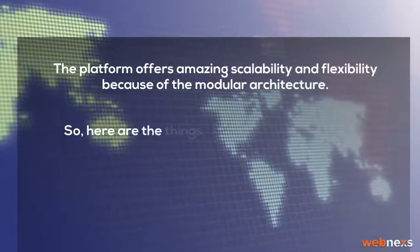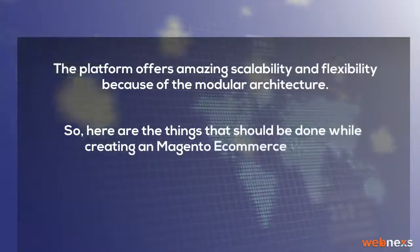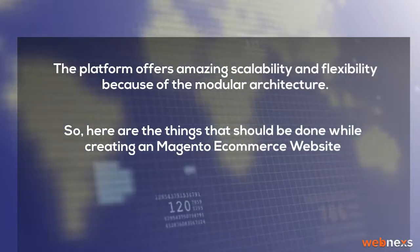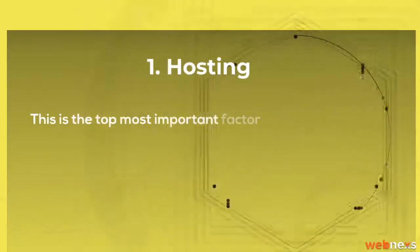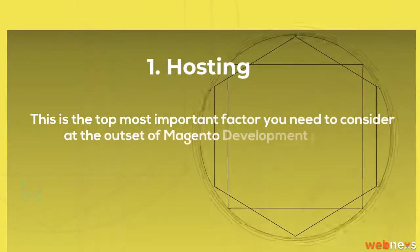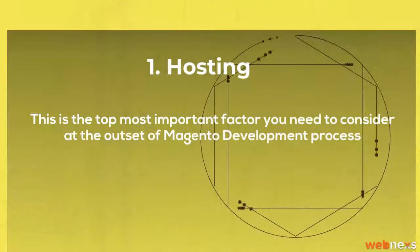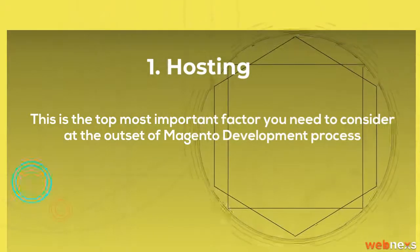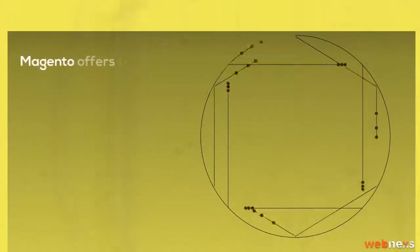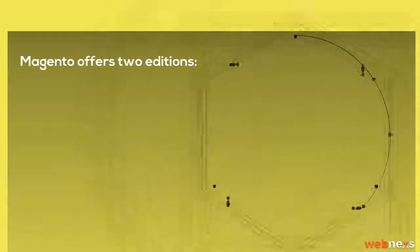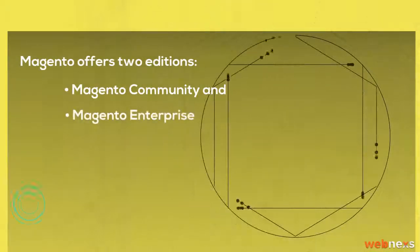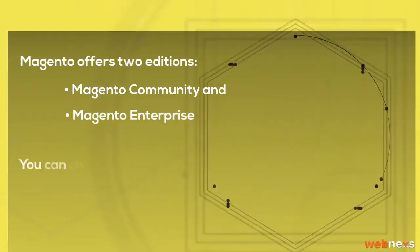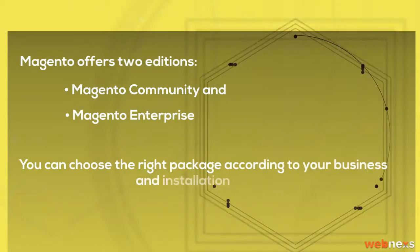So, here are the things that should be done while creating a Magento e-commerce website. Hosting is the top most important factor you need to consider at the outset of the Magento development process. Magento offers two editions: Magento Community and Magento Enterprise. You can choose the right package according to your business and installation needs.